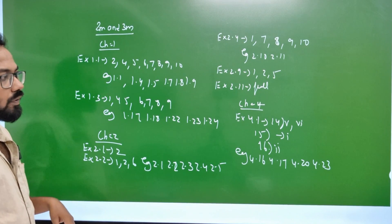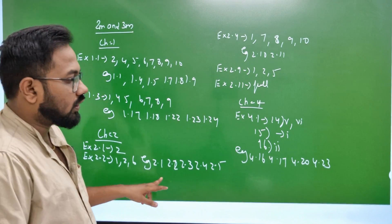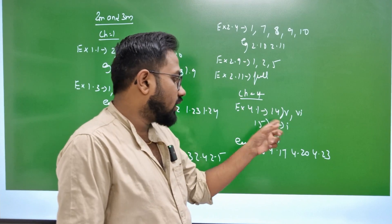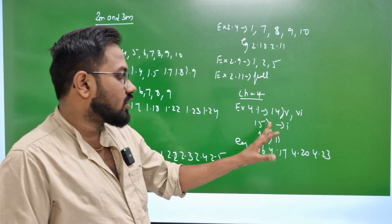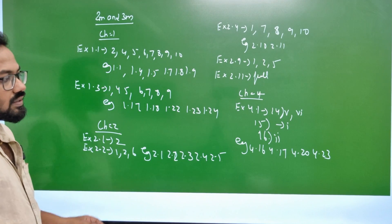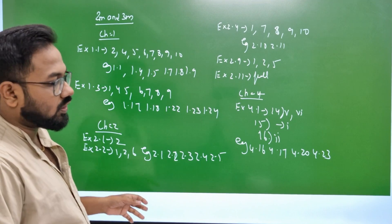Chapter 4 — 4.1, factorial: 14th, 15th, 1st, 16th, 2nd, 1st. Example 4.16, 17, 20, 23.